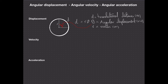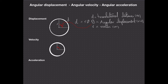What about velocity? If I redraw the circle — we have this angular displacement present. If this circle or object is rotating, we're going to have a velocity. Angular velocity is the rate of change of angular displacement — so how fast this displacement is occurring.